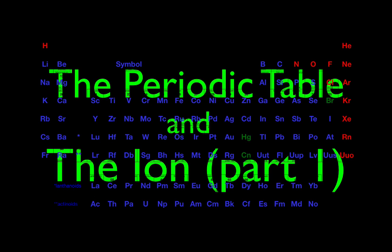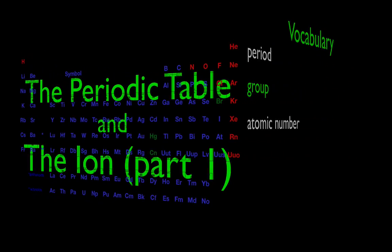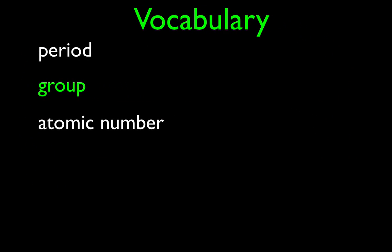In today's video I'm going to go over the periodic table and ions. This is part one. We're just going to go over an overview of ions, the two kinds of ions, and how atoms become ions. And then in part two we will solve some simple problems and answer some simple questions concerning ions.